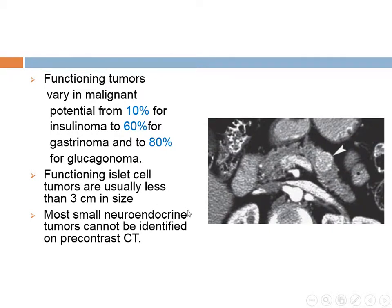On contrast CT, we can see an avidly enhancing mass, mostly an islet cell tumor, because pancreatic adenocarcinoma is non-vascular and delayed enhancing. So when you have a mass that enhances on arterial phase CT, you don't think of adenocarcinoma — you think of islet cell tumor or metastasis, because pancreatic adenocarcinoma is relatively hypovascular with delayed enhancement.